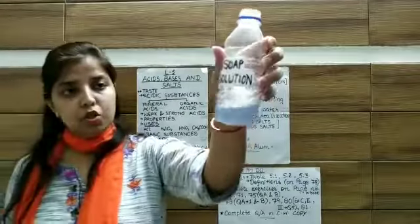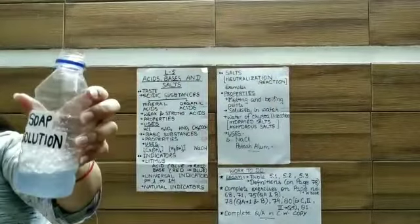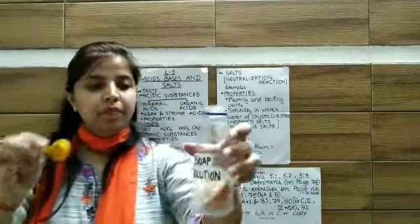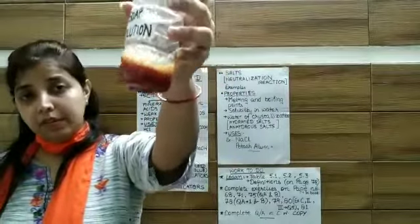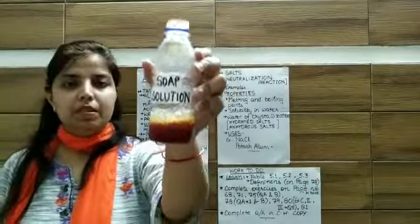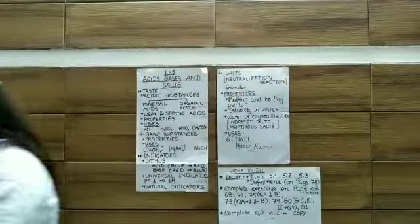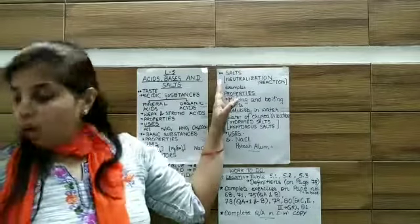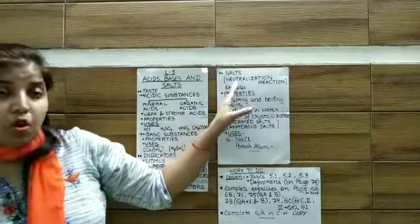If we take soap solution and add turmeric to it, it becomes red in color, showing that it is a basic substance. So children, this was about natural indicators. Now we will move on towards salts.